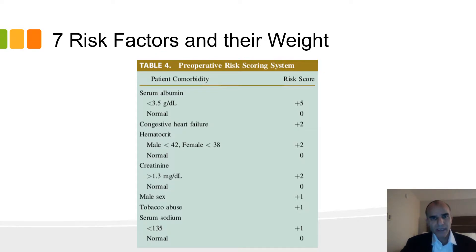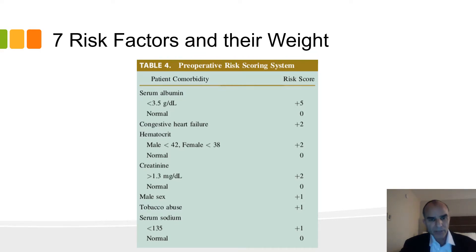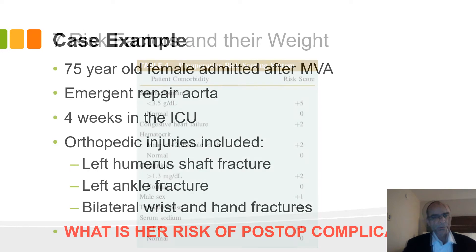They found seven factors and the weight of each one. At the top of the list is serum albumin, reflecting nutritional status and ability to heal — and perhaps overall health status — with the highest risk score of 5 points alone. The other factors are congestive heart failure, hematocrit, creatinine, male sex, tobacco use, and low serum sodium.